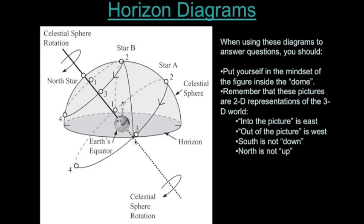What direction does this person face to see star A at position 2? Since right in the diagram is south, point 2 looks like it's right on the line above the southern horizon. If you were this person, you would be facing south, high in the sky, to see star A when it gets to its highest point. Most things that rise and set reach their highest point above the southern horizon.